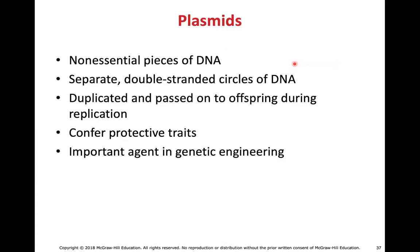Plasmid DNA consists of non-essential, separate double-stranded circular pieces of DNA — usually a handful of genes, anywhere from two to three genes and around a thousand base pairs. They typically confer protective traits and are passed on during replication, but can also be passed from cell to cell using a sex pilus. Plasmid DNAs are important because they can contain genes leading to drug resistance or virulence factors that help bacteria cause disease.